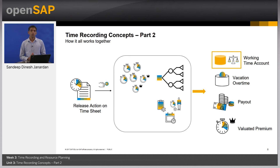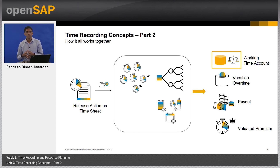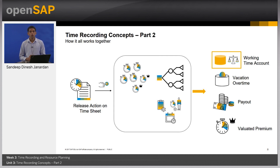This slide summarizes much of what we learned in the last couple of units. When a user submits a time recording in the timesheet, valuation is triggered. All configuration settings — including the time recording profile, the type of time recording, the time accounts associated with it, and the planned working time for that day — are taken into account. This results in postings in the working time account or other time accounts, times marked as payout, creation of a valuated premium, and in the case of project, service order, or sales order time recording, documents in the downstream process.